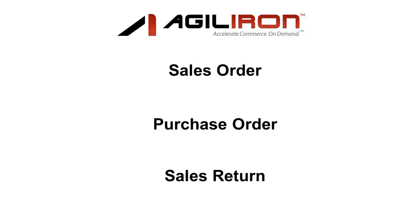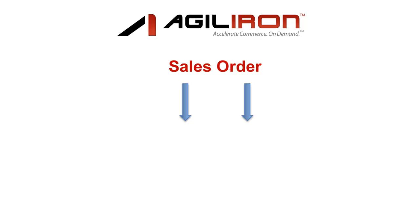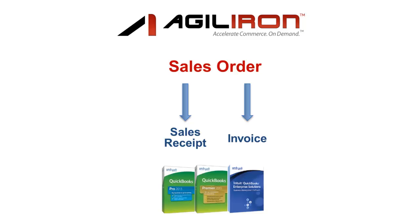I will start with the sales order. This could be any order, from any customer, from any of the various channels you sell through — from your website, your telesales group, your Amazon or eBay listings, a wholesale web store, etc. For demo purposes, I will start from scratch and create a brand new sales order, as if it was coming from one of our own sales reps coming in through our AgileIron CRM.